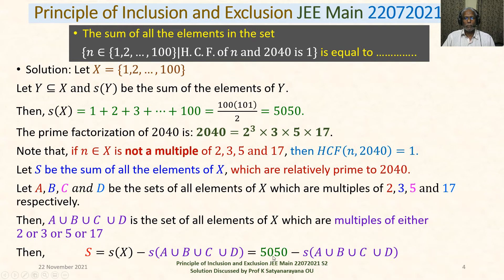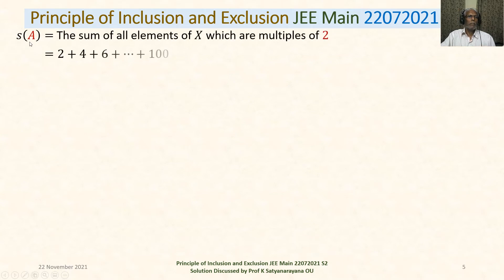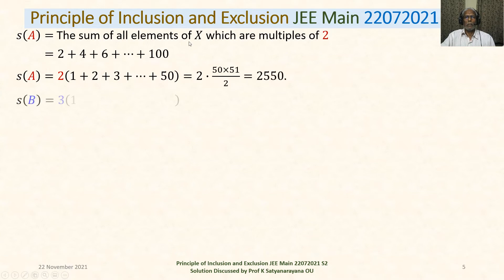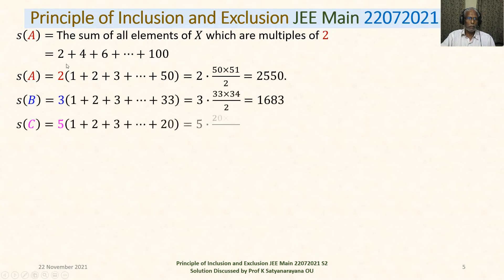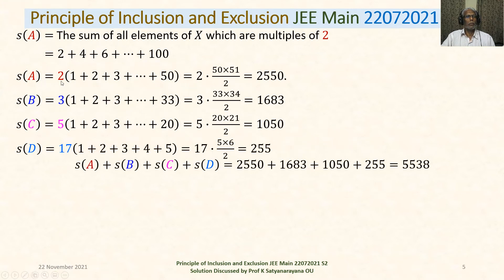S(X) is 5050 minus S(A ∪ B ∪ C ∪ D). We now compute S(A), the sum of all elements of X which are multiples of 2: that is 2 + 4 + 6 + ... + 100 = 2 × (1 + 2 + ... + 50) = 2 × (50 × 51 / 2) = 2550.